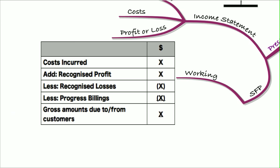So costs incurred, add any recognized profit, less any recognized losses, less any progress billings that will be given to you in the question. And that will give you a gross amount to or from customers. If it's positive, it will be an asset, an amount due from customers. If it's negative, it will be a liability, amount due to customers.